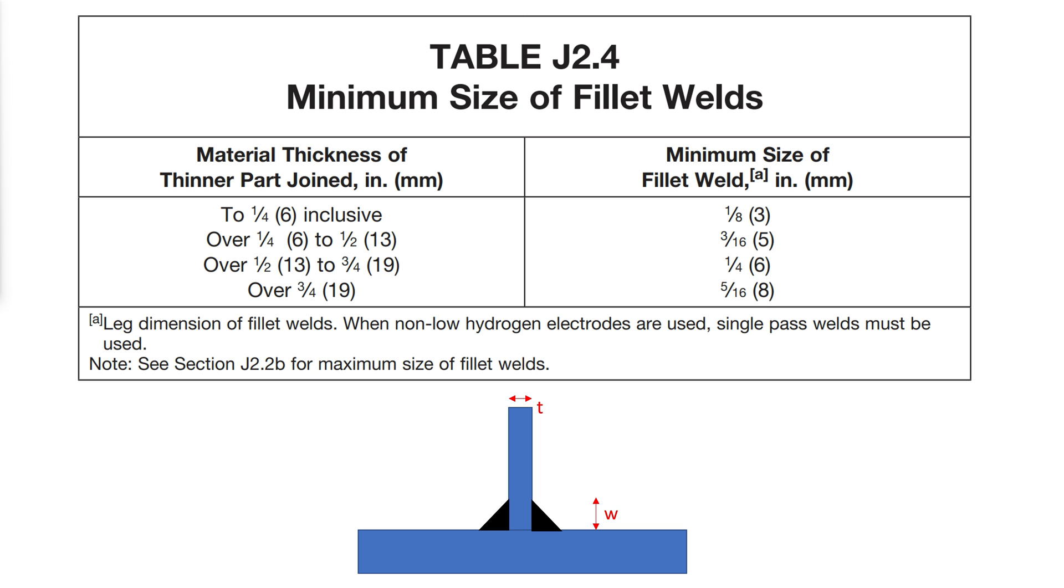The minimum weld size W permitted is a function of the thickness of the inner connected part and is given in AISC table J2.4.